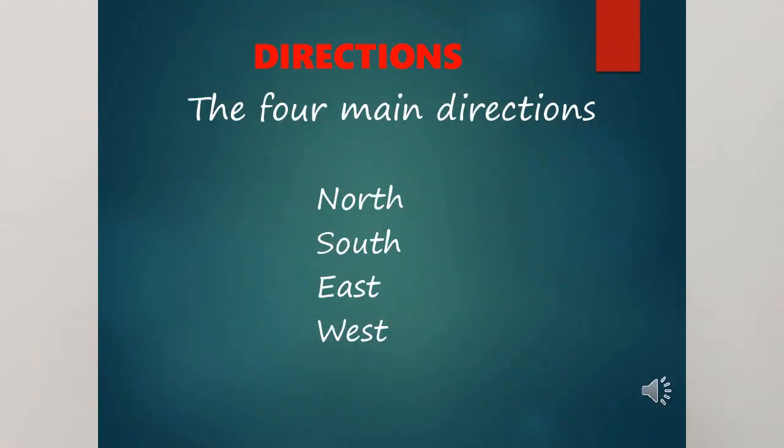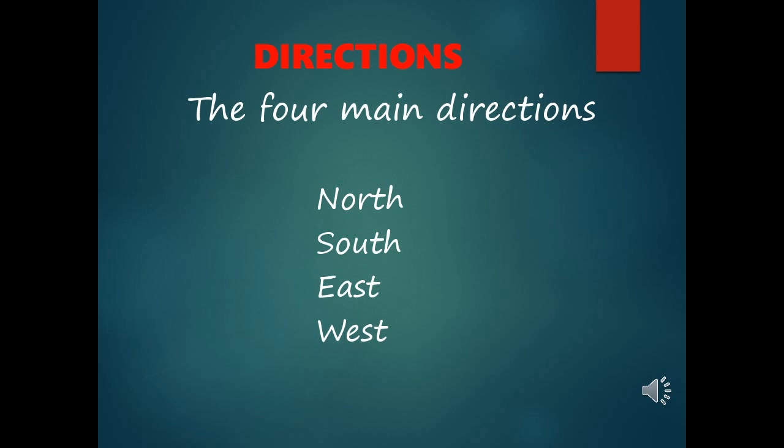A compass helps us to find these directions. The compass has a needle that always points to the North. If we know where North is, it is very easy to find all other directions. Down will be South, the right side will be East, and the left will be West. We need to know the directions to find a place on the map. The four main directions are North, South, East, and West.